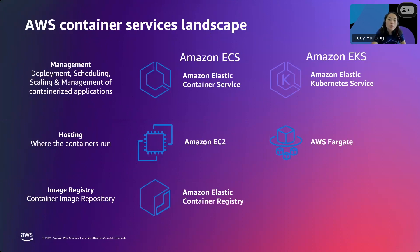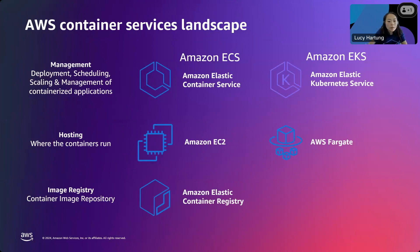We also have hosting options: EC2, where you can manage the underlying instances on which your containers run, or you can choose to run your app containers in a serverless manner with AWS Fargate. Last but not least, we also have the container registry — a fully managed container registry offering high-performance hosting where you can reliably deploy application images and artifacts anywhere. That's a high-level overview of what we offer for containers.